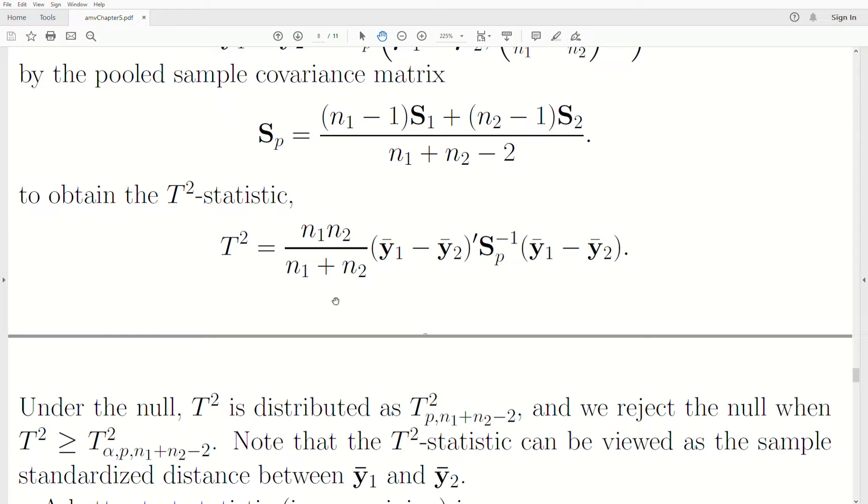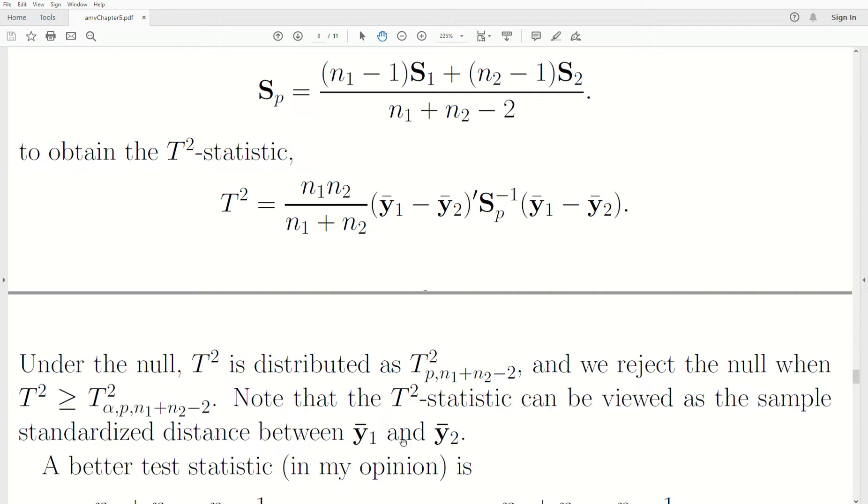This has a distribution called Hotelling's t-squared distribution with p numerator degrees of freedom, sometimes called dimensions, and n1 plus n2 minus 2 denominator degrees of freedom. We reject if this t-squared is too big, greater than the cutoff value at the α level. The t-squared statistic can be viewed as a standardized distance between these two mean vectors. If the two sample mean vectors are too far apart, we get a big t-squared value, and the population mean vectors are probably not the same.